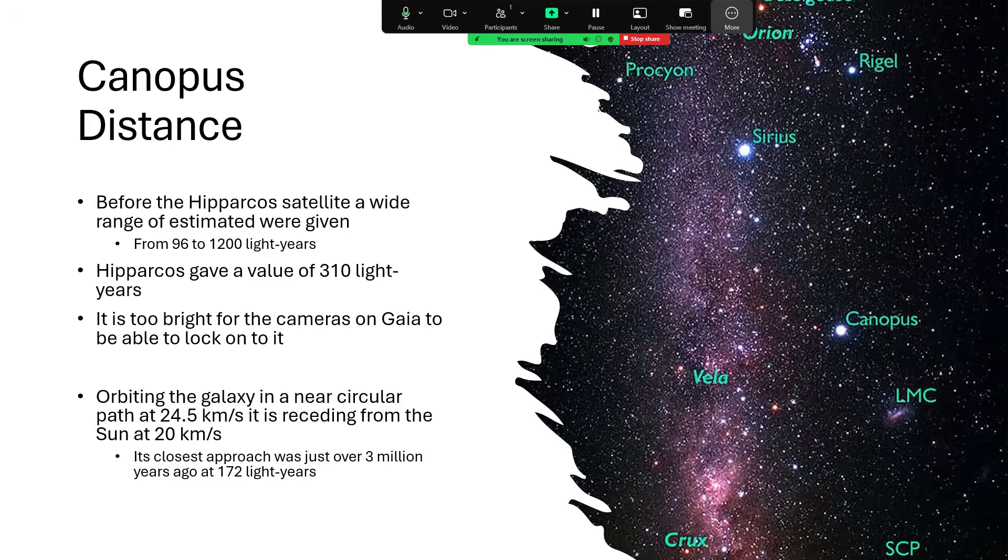And of course, estimates of its size, mass, power, etc., varied with those, because the standard candle rule tells us that at a greater distance from us to be seen as the same brightness, it would have to be a more powerful star.